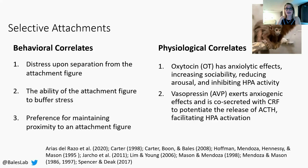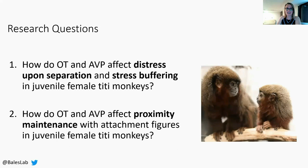Most of the work examining the roles of oxytocin and vasopressin in titi monkeys has focused on males. Therefore, it's especially important to understand the role these neuropeptides play in female attachment behavior. We asked two main research questions: first, how do oxytocin and vasopressin affect distress upon separation and stress buffering in juvenile female titi monkeys? Second, how do oxytocin and vasopressin affect proximity maintenance in these females?